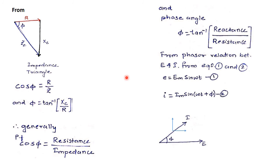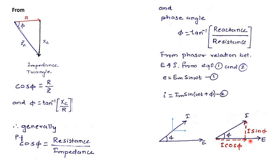From the equations, vector I is at angle φ leading with respect to E. Resolving vector I into components: the horizontal component is I cos(φ) and the vertical component is I sin(φ). From this right-angle triangle, the base (in phase with voltage) is I cos(φ) and the opposite side is I sin(φ). The component I cos(φ) falls in phase with the voltage, and I sin(φ) is the component leading the voltage.